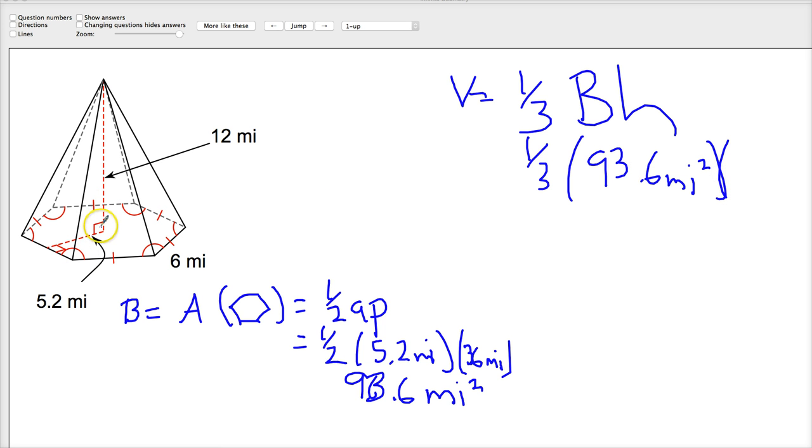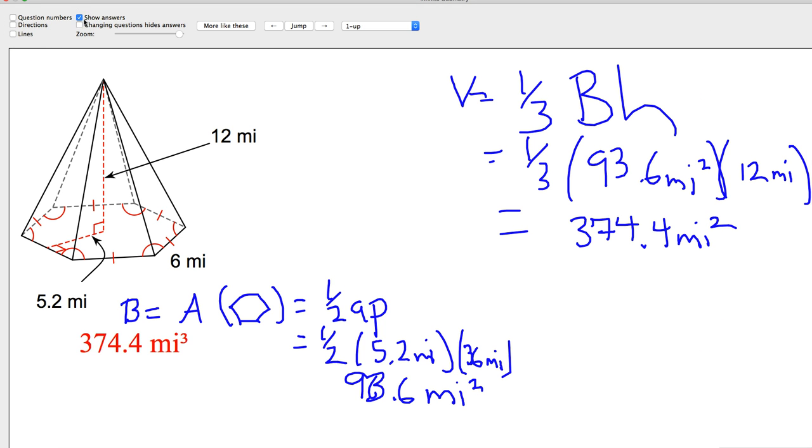Then we're going to multiply by the height of the figure, which is 12. Multiply by one third. It's easier just to do 12 times one third, which is four, and then multiply by this, as opposed to typing in that whole 0.333 repeating, because sometimes it doesn't give you as accurate of an answer. 374.4 miles cubed.